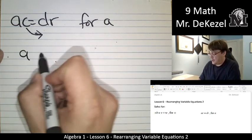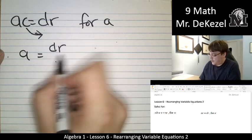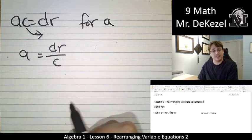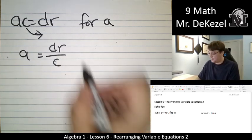a is equal to dr divided by c. And that's it.